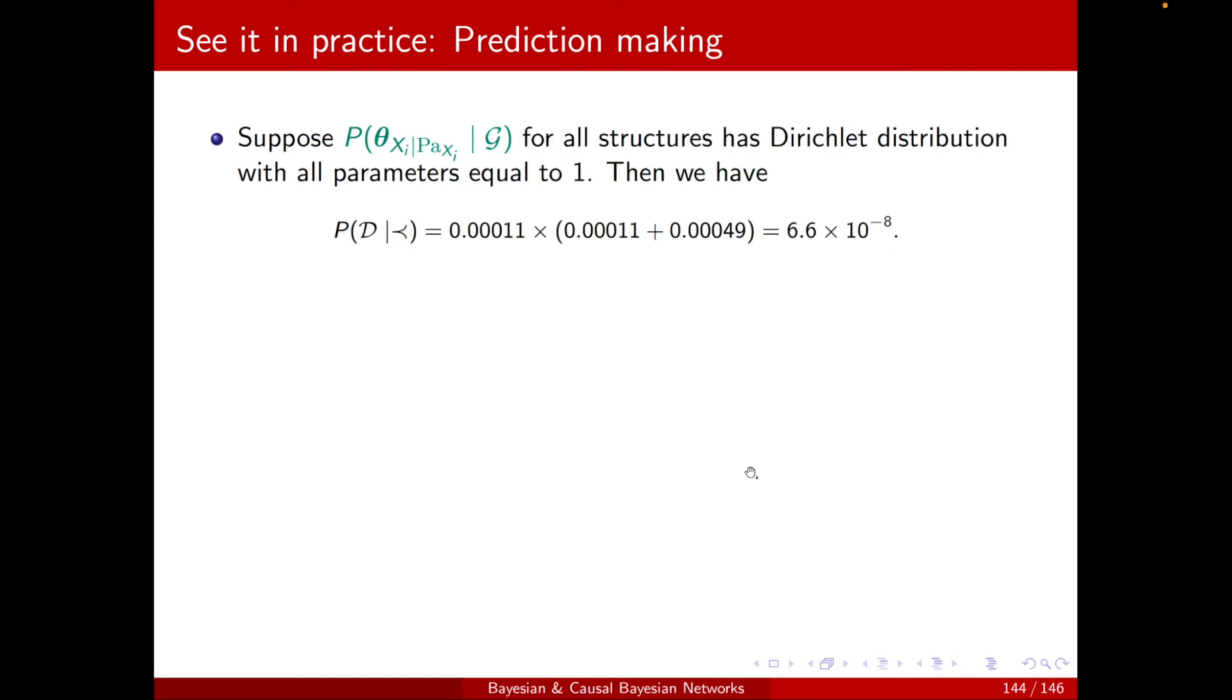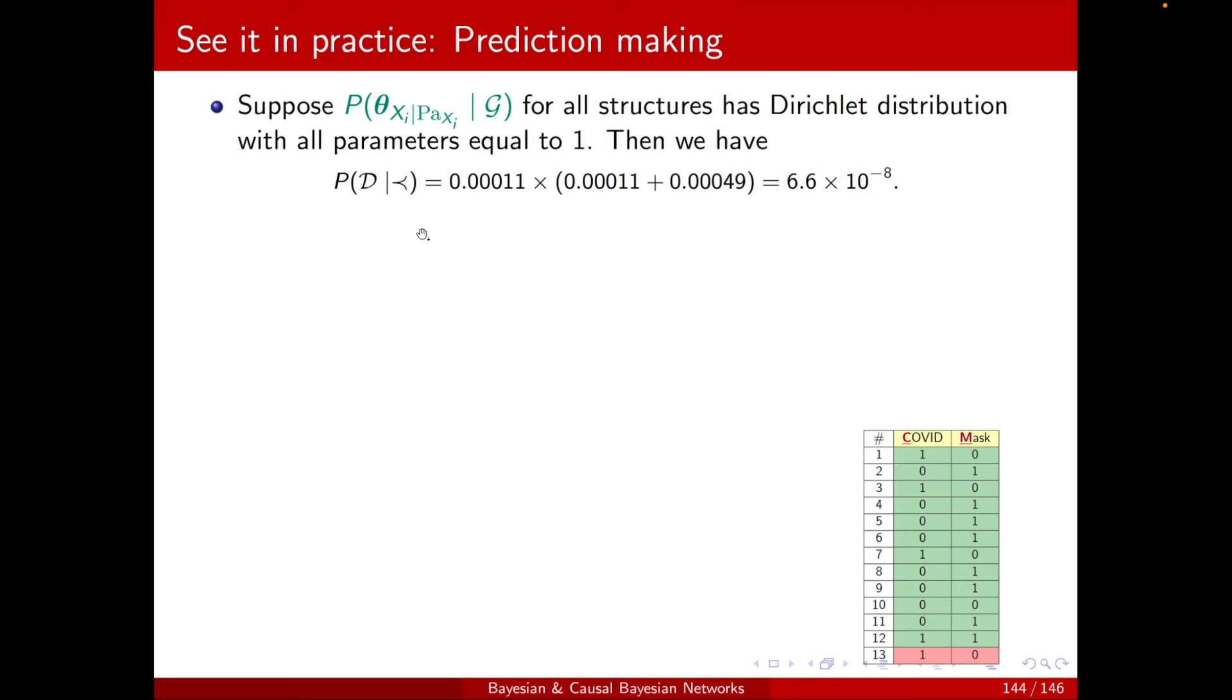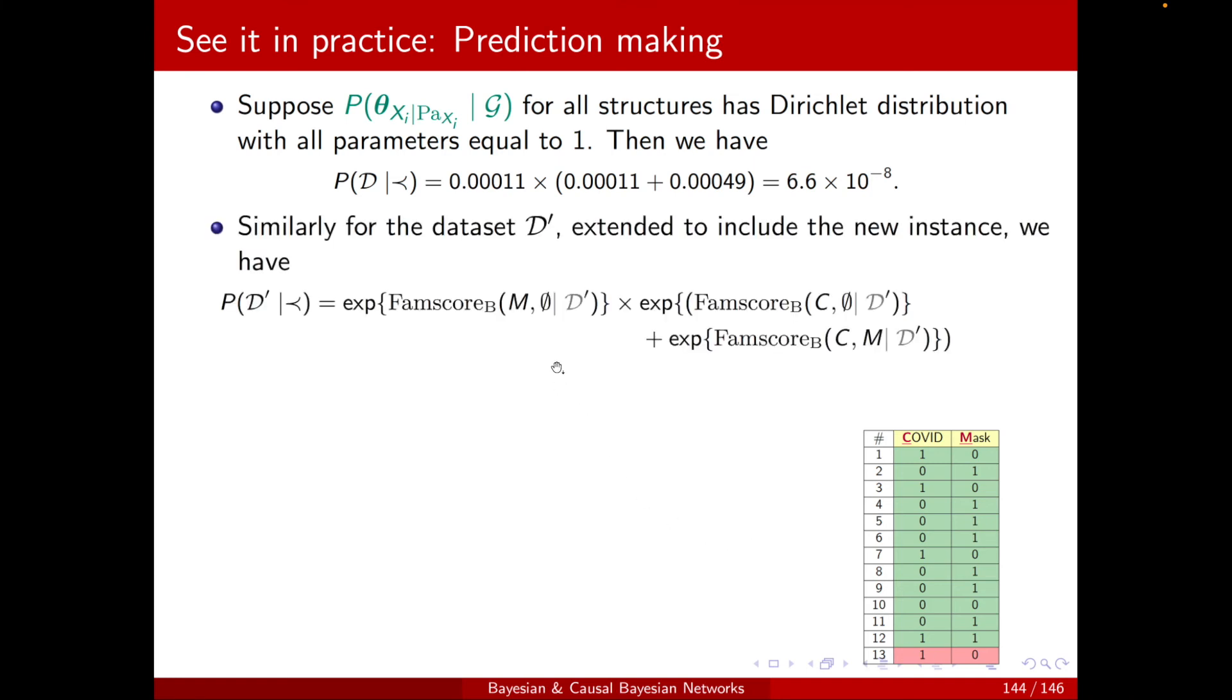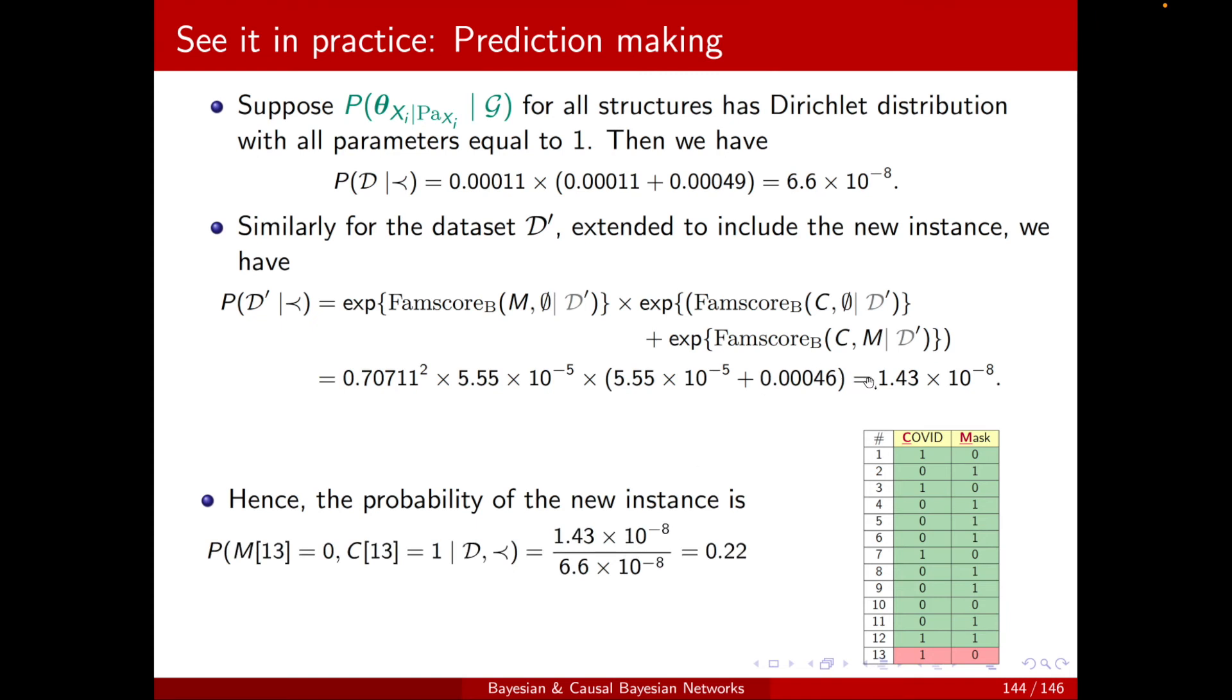I still need to calculate the probability of the augmented data when I add this new instance. Recall it was the probability of not wearing a mask but being infected by COVID. And I will do it exactly the same way as how I calculated P(D). Just note that here I'm taking the one over |G| to the power of one over N and sigma multiplied over I. If I do the math, I will get this final value. And this means that the probability of the new instance is equal to 1.43 times 10 to the power of minus 8, divided by this term, I will get 0.22. So the probability of a new instance being 1, 0, is 22%.